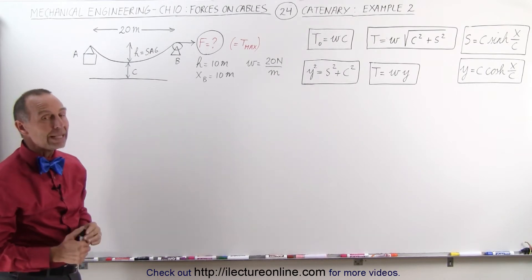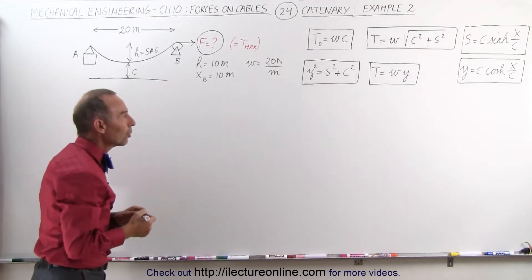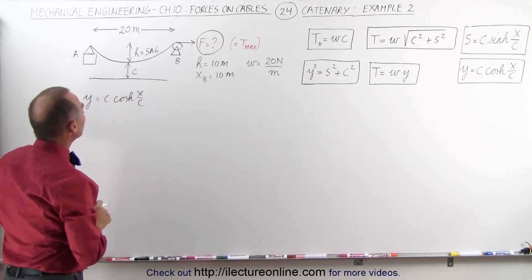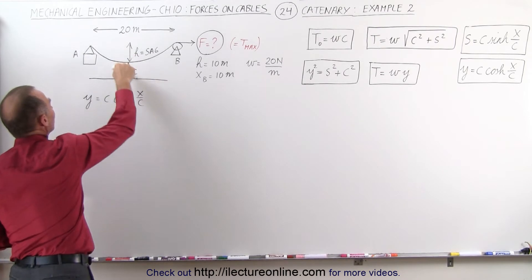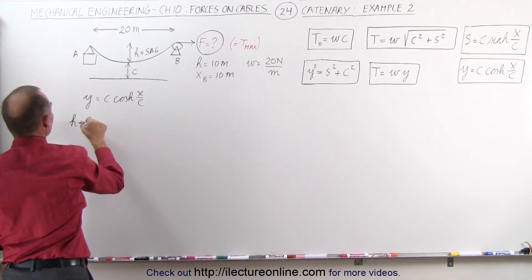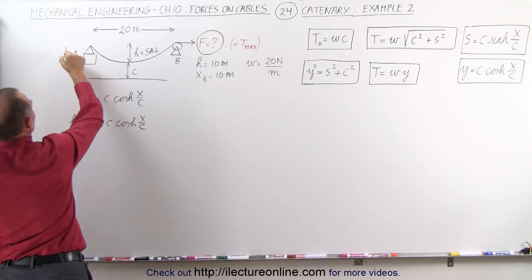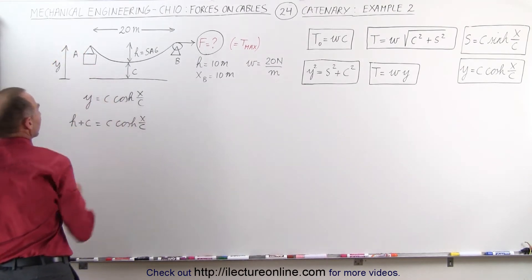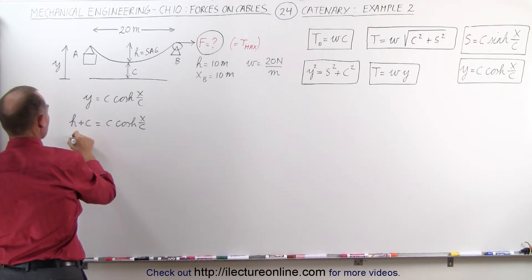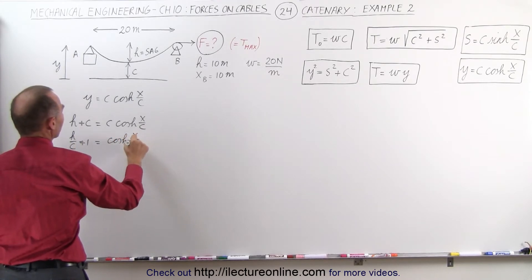Notice the equations we may need. We're going to start with y equals c times the hyperbolic cosine of x over c. The first thing we do is replace y — which is the sum of two distances — by h plus c. So we get h plus c equals c times the hyperbolic cosine of x over c. Dividing both sides by c gives h over c plus 1 equals the hyperbolic cosine of x over c.